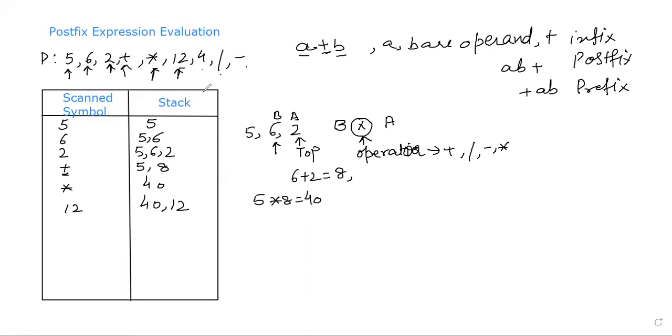Similarly, the next thing that we come across is, after 12, we have got 4. So when we come across 12, after 12, we'll insert 4. After that, we have a sign of division. So we need to perform 12 divided by 4. That will give me 3. So 40, 3 will be there in the stack.